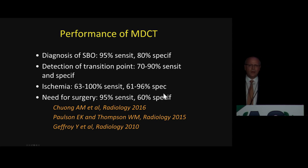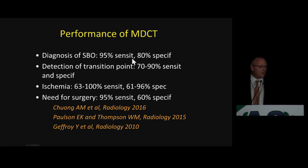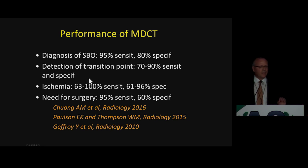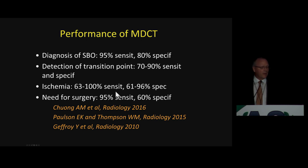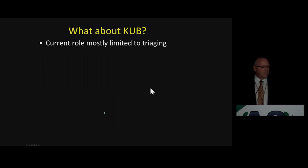How good is CT for detecting and classifying obstruction? Very good — sensitivity about 95%, a little bit lower specificity for detecting the transition point, up to 90%. For ischemia, up to 100% but closer to 80% when you combine all series. For determining the need for surgery, which is really the most important parameter, 94-95% sensitivity and lower specificity. CT is better than any combination of clinical or laboratory parameters to make this determination.